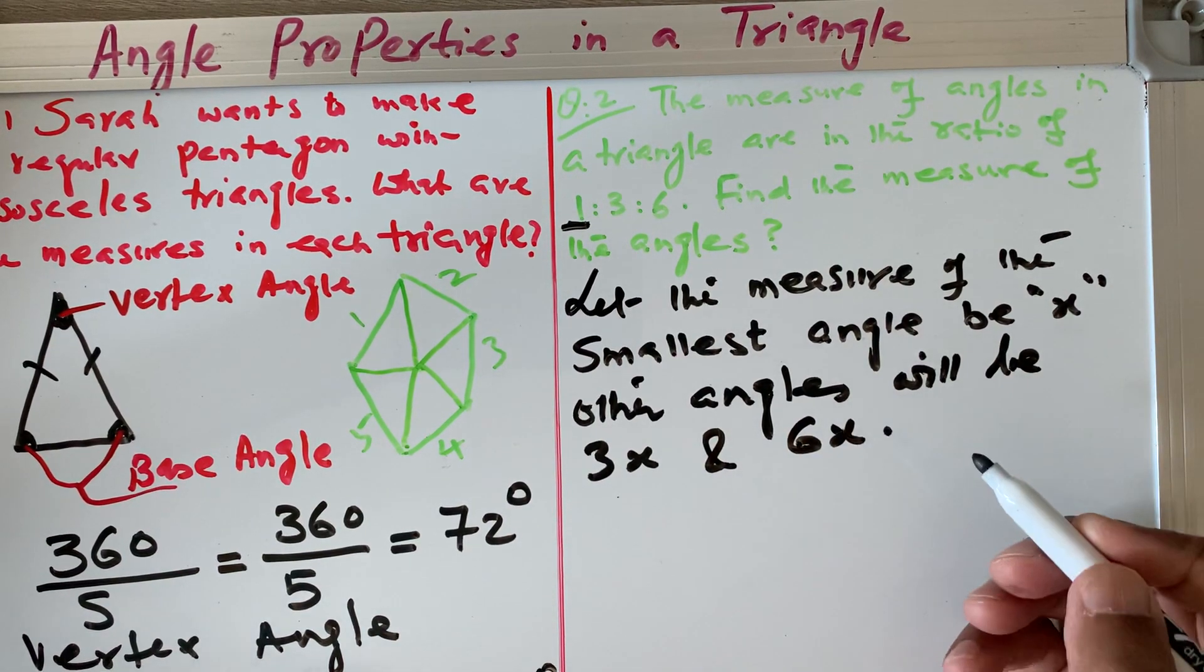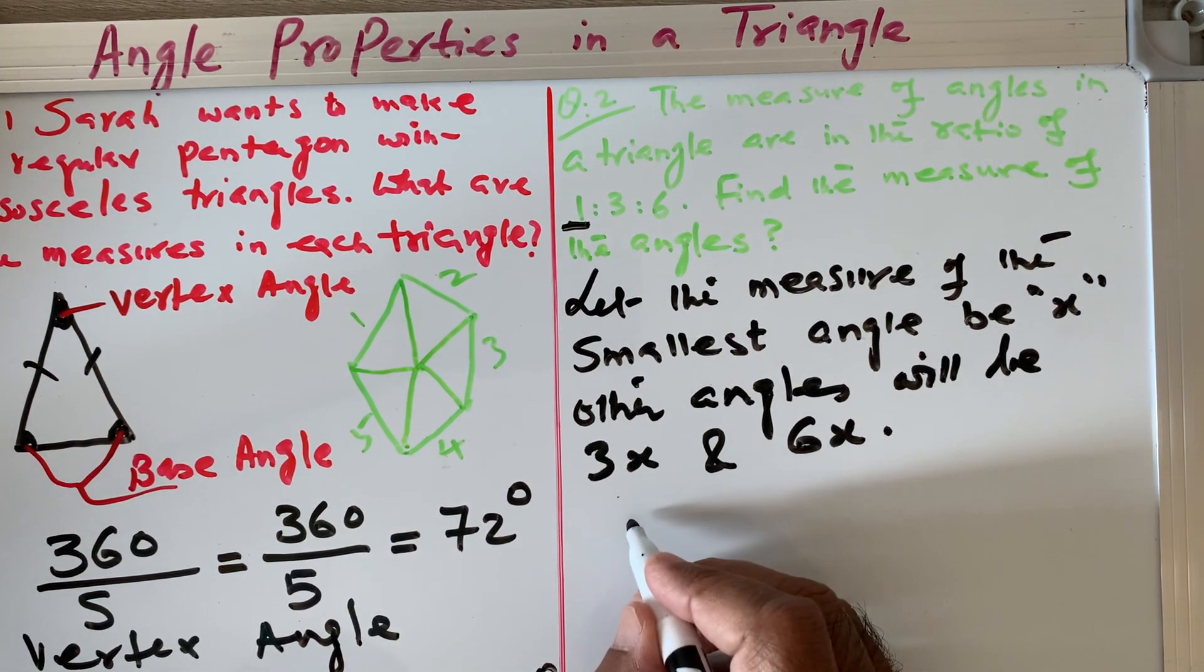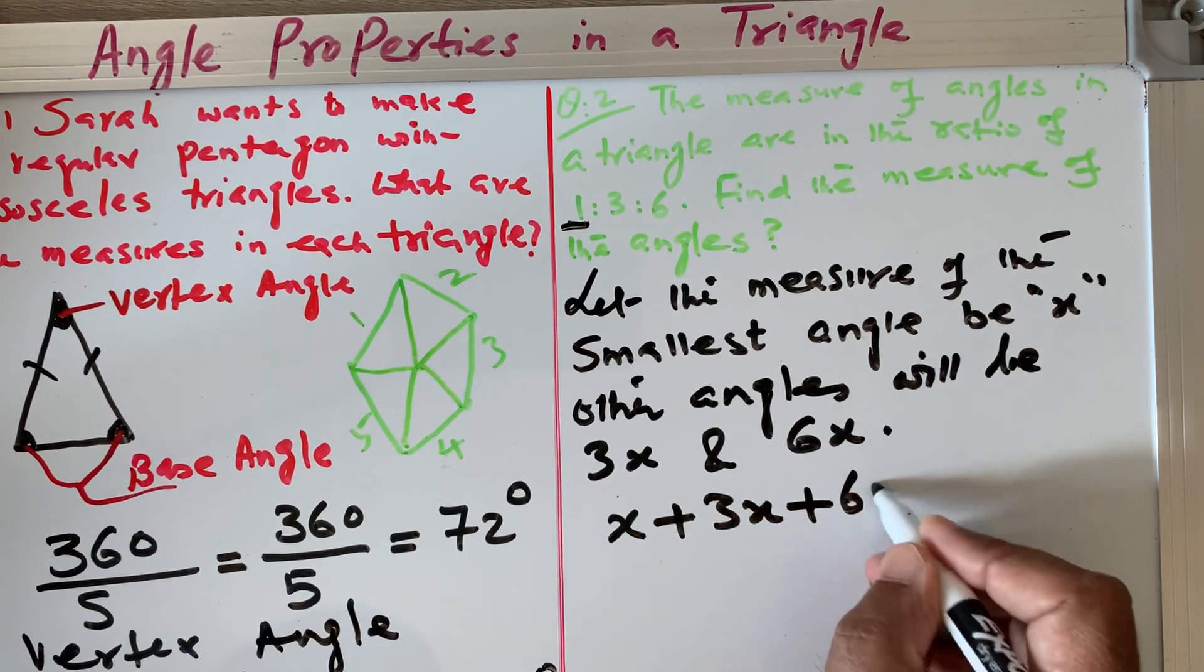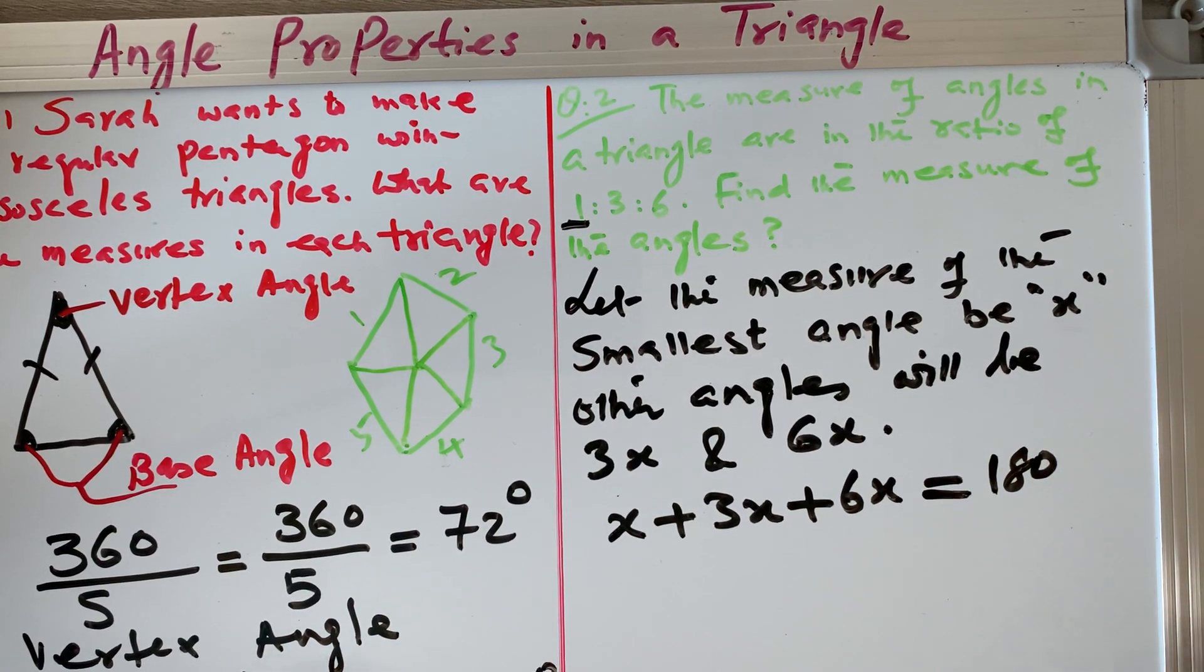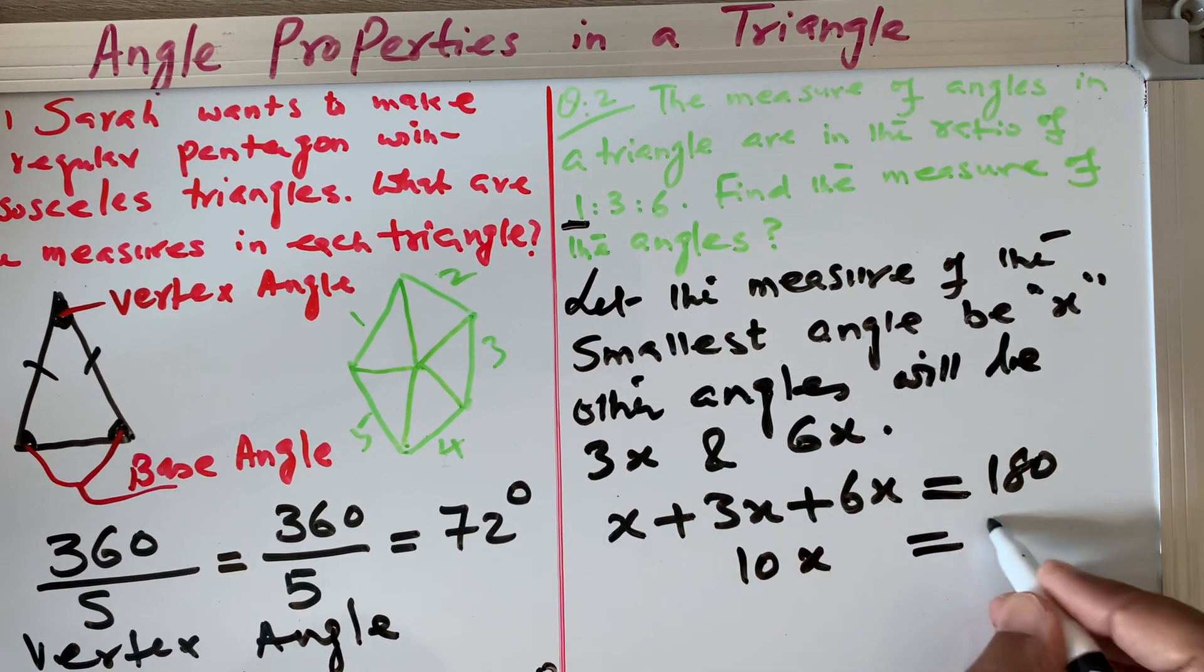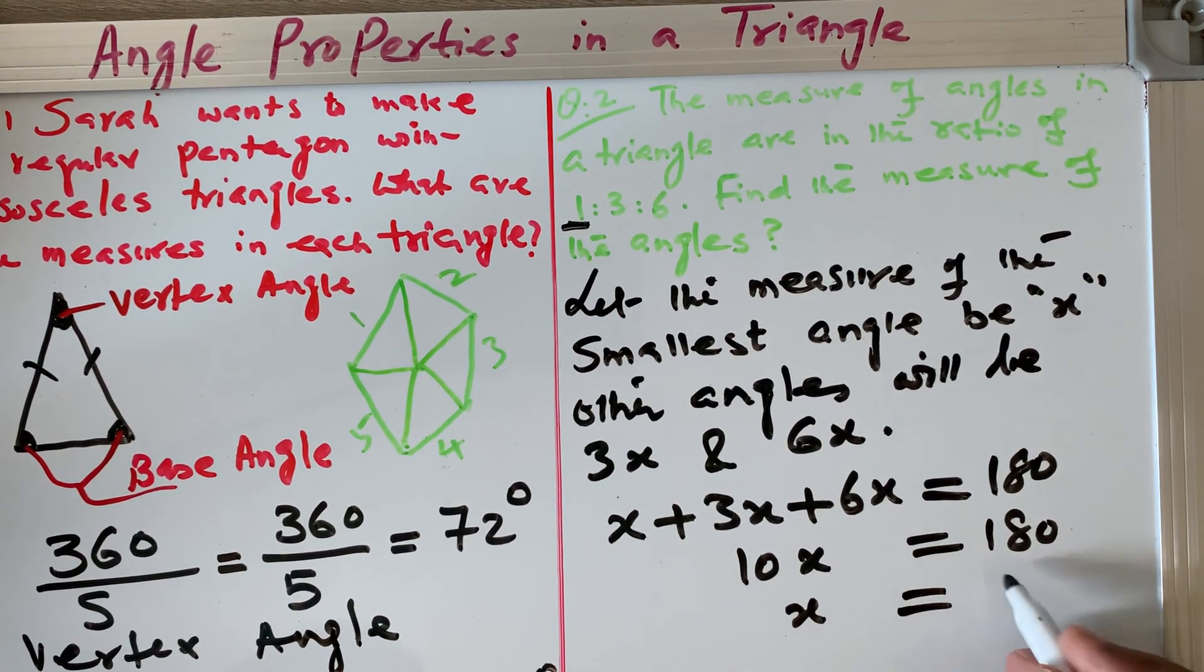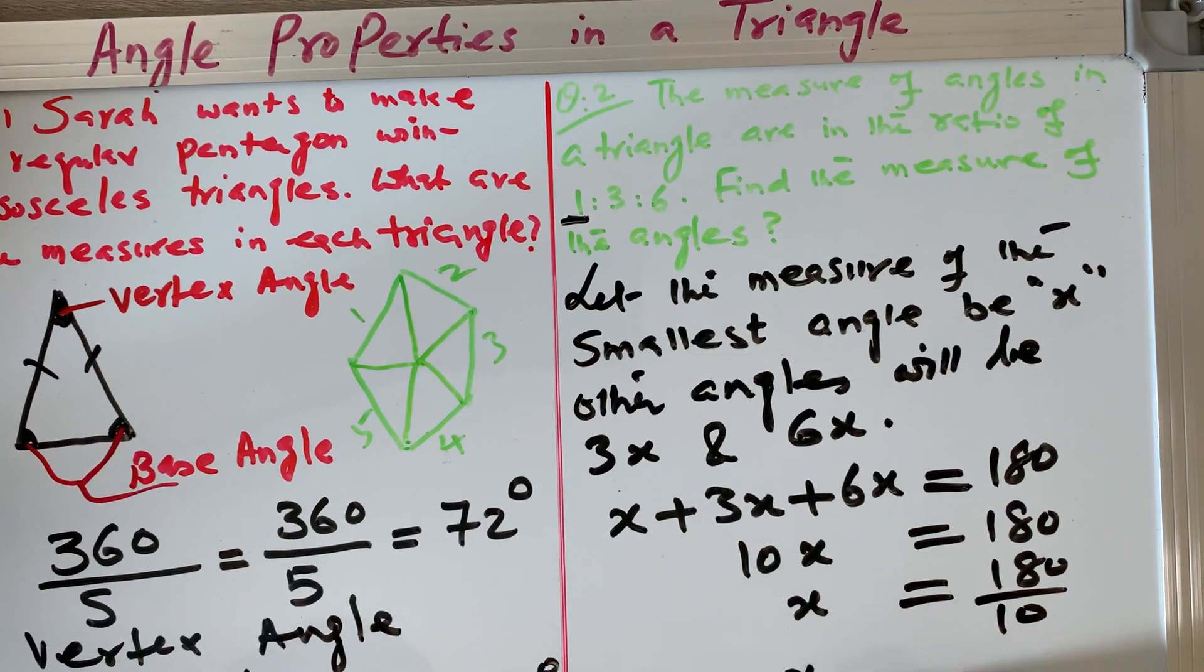So if we add all these angles, the other angles will be 3x and 6x. We know that the sum of all angles of a triangle equals 180. So if my one angle is x, other angle is 3x, third angle is 6x, their sum will be 180. So we add them up: 6x plus 3x is 9x, plus 1x is 10x. So 10x equals 180. Therefore, x equals 18 degrees.